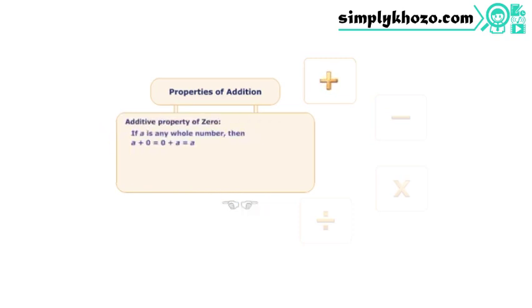When zero is added to any whole number, the sum is the whole number itself. Zero is the identity element of addition.